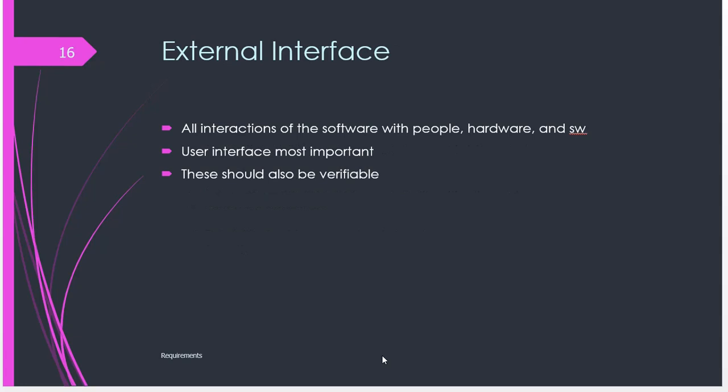External interfaces refer to how other people, hardware, or software communicate with our system — what we can call our external entities. We need to look at which people interact with the system, and which systems either give information to or receive output from our system. This should all be verifiable through the requirements gathering process. It's also important to come up with a good user interface where people are going to interact with the system.